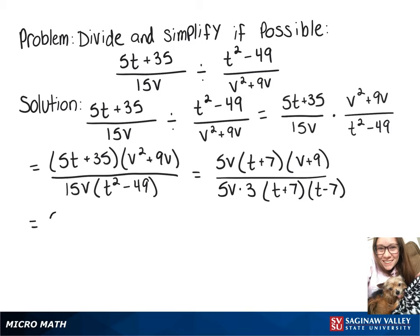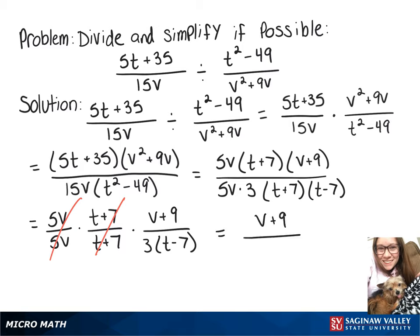To simplify, we can rewrite this as 5v over 5v times t plus 7 over t plus 7 times v plus 9 over 3 times t minus 7. 5v over 5v and t plus 7 over t plus 7 will cancel out, leaving us with v plus 9 over, and we distribute that 3, 3t minus 21.